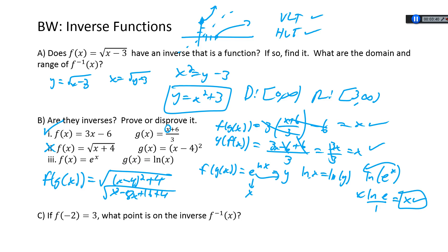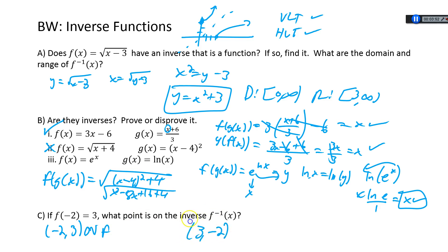Alright, next: if f(-2) equals 3, what point is on the inverse f⁻¹(x)? If f(-2) is 3, that means the point (-2, 3) is on f. So on the inverse we're going to have (3, -2). That's all there is to it.